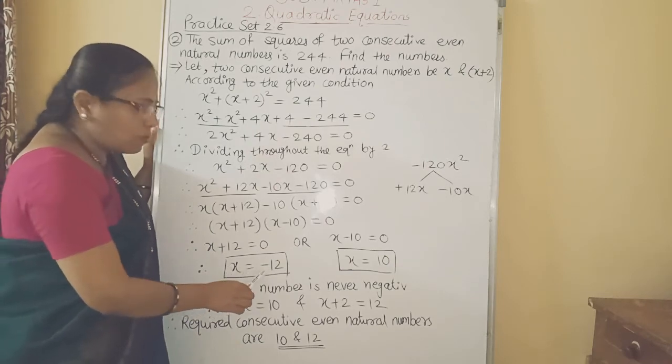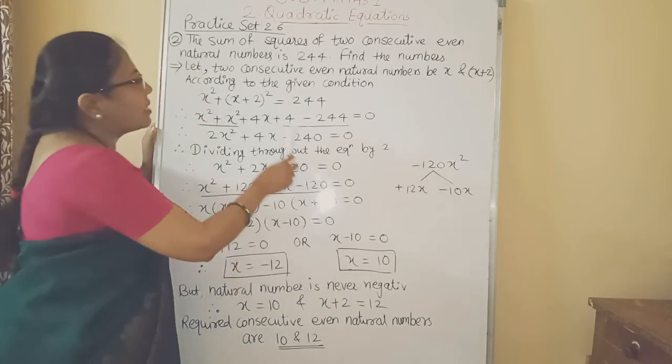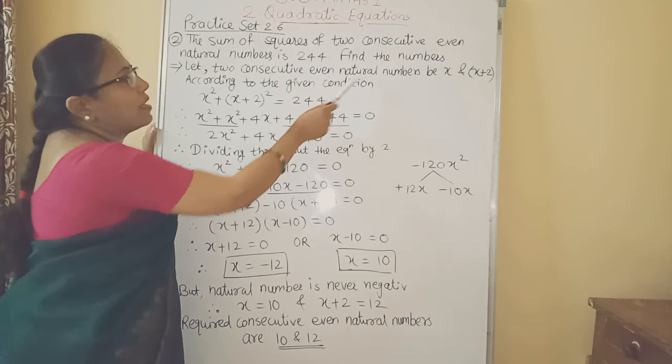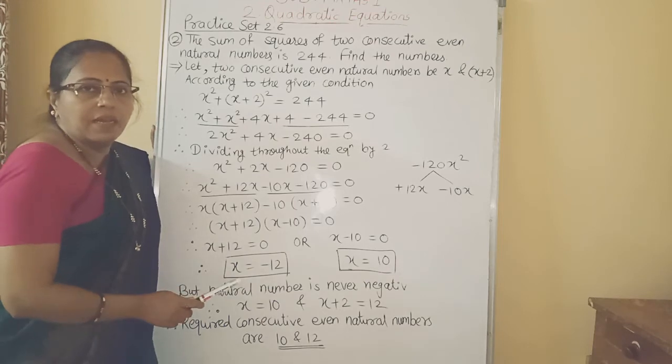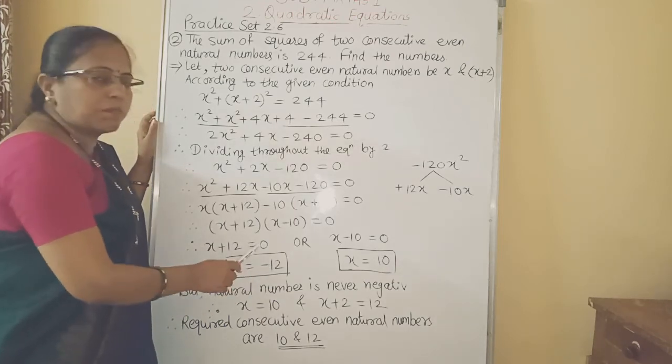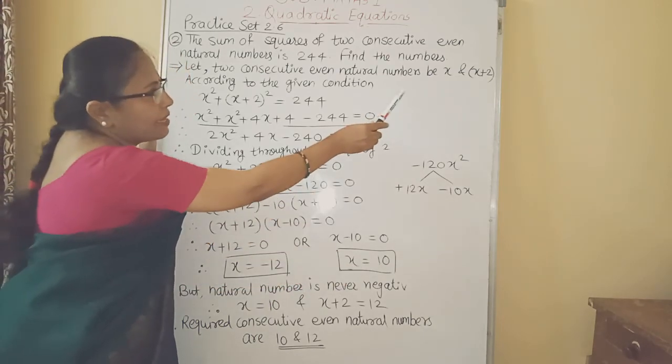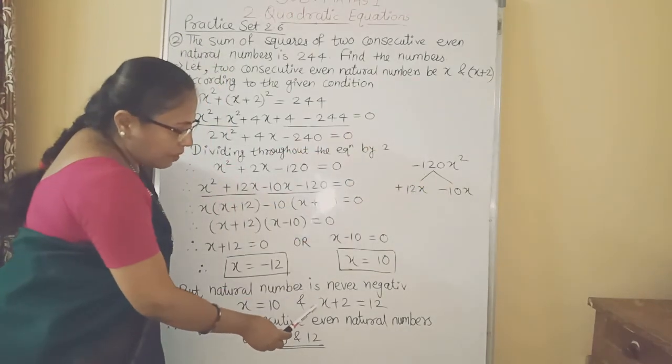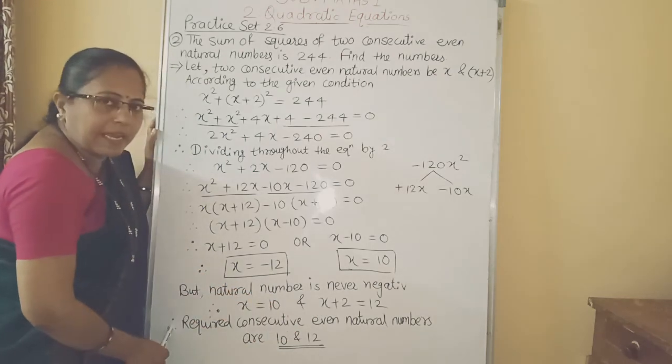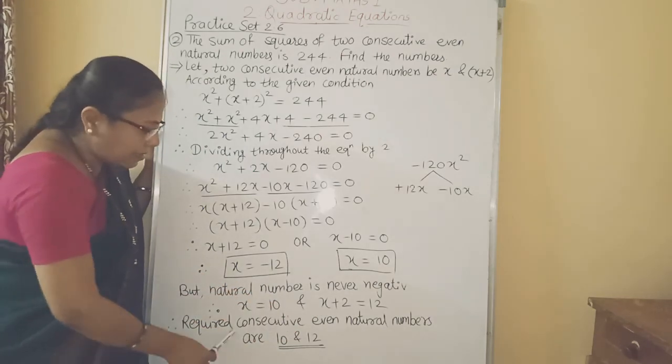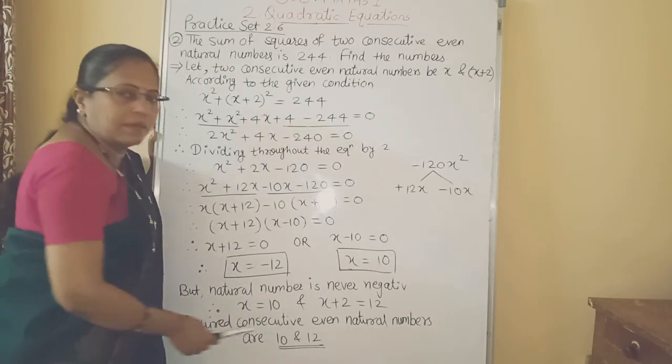Now x means what we assume even natural numbers and even natural numbers is never negative. So we have to neglect these for negative value. We will take x is equal to 10. And the second even number is x plus 2. Therefore x plus 2 is equal to 12. 10 plus 2 is 12. So now we will write the answer. Therefore required consecutive even natural numbers are 10 and 12.